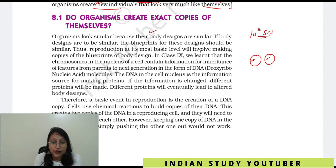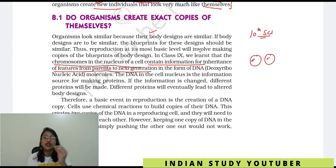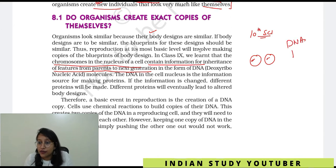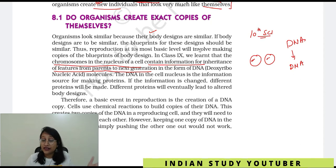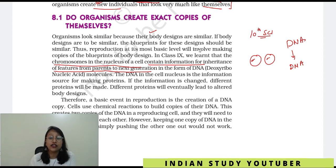What did we learn in 9th class? The chromosomes are in the nucleus of a cell. In the cell nucleus there is information that is transferred from parents to the next generation. The parents' DNA comes into us. We are somewhat similar to our parents — not the same exactly, but some features are almost similar to our parents.